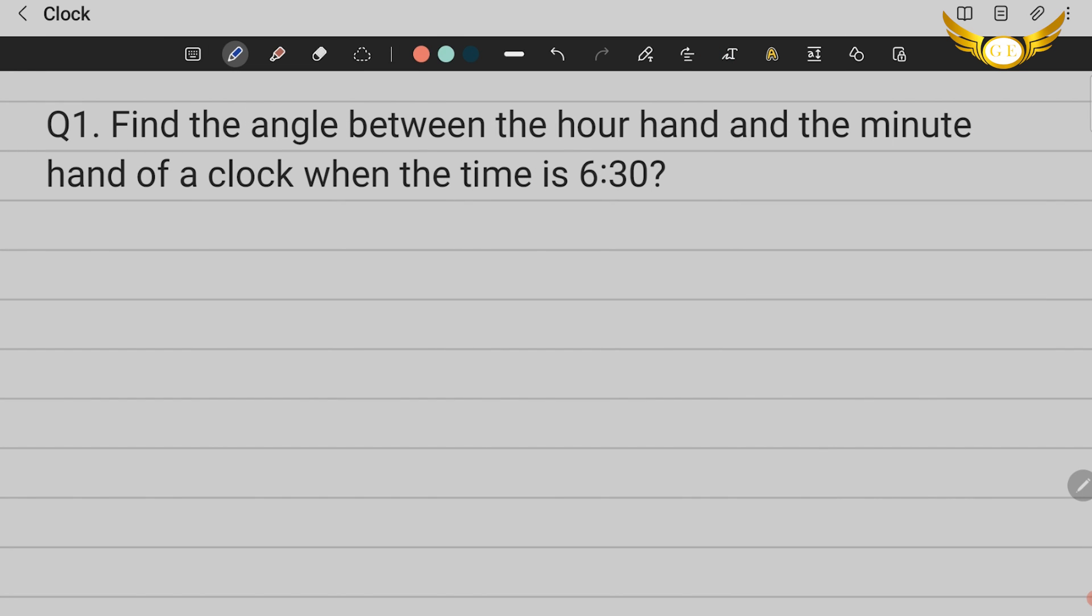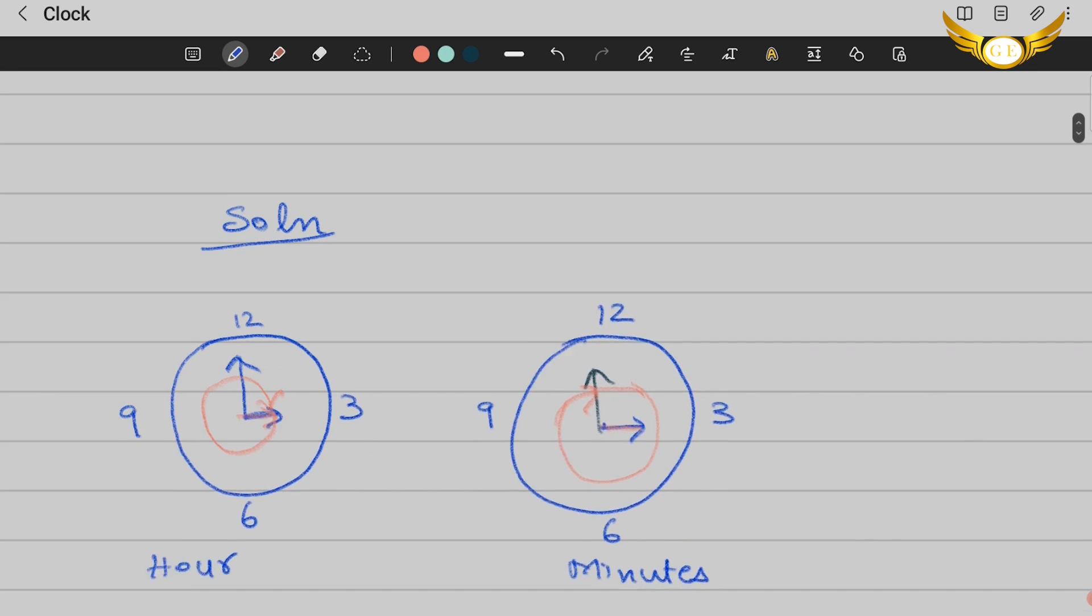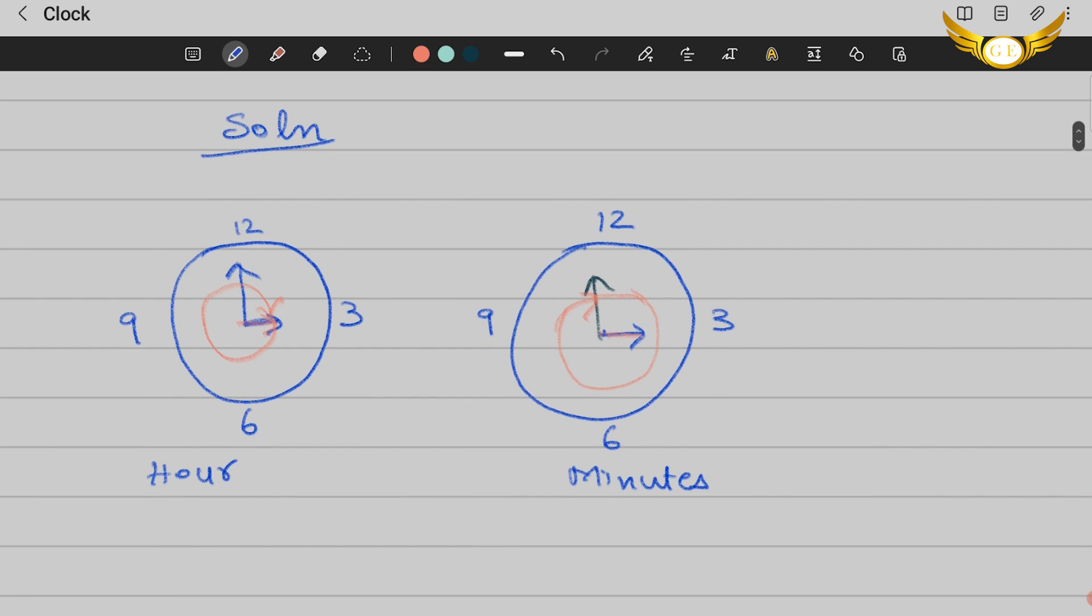The next question is from clocks: find the angle between the hour hand and the minute hand of a clock when the time is 6:30. Let me explain what this means. I have drawn two clocks for you.